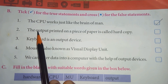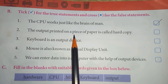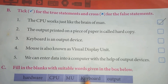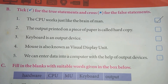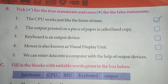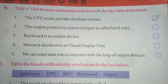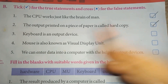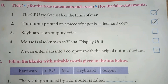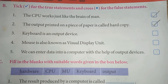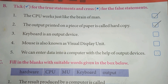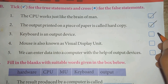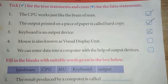Question number 2. The output printed on a piece of paper is called a hard copy. When we remove a printout from the printer, we call that paper a hard copy. True or false? True. Question 3: Keyboard is an output device. No — the keyboard is an input device. False.